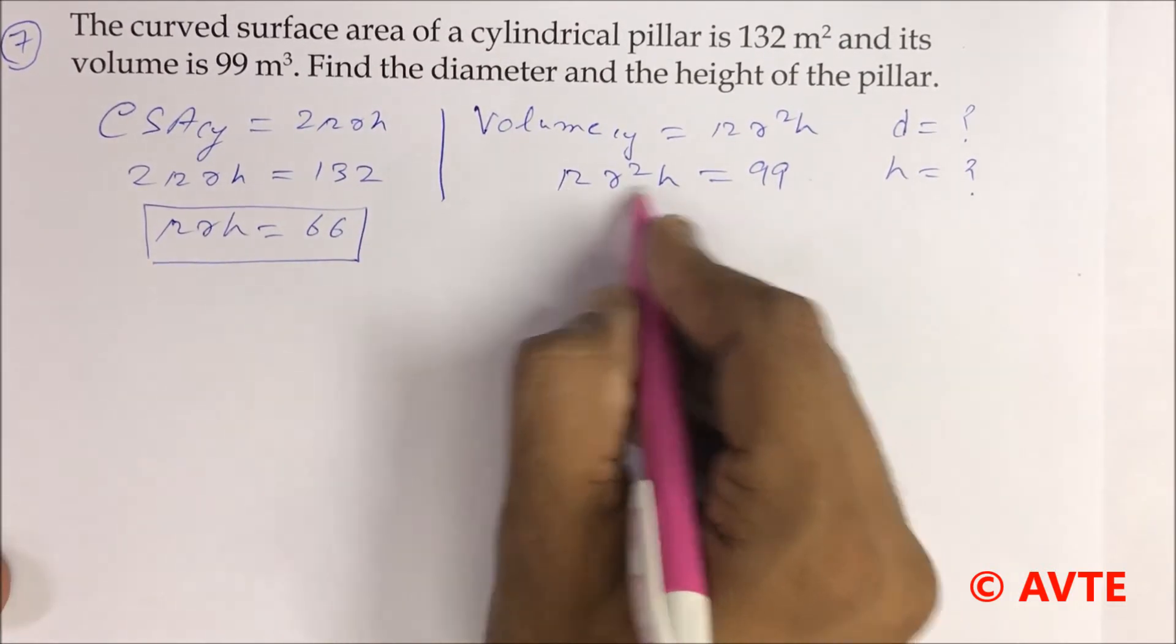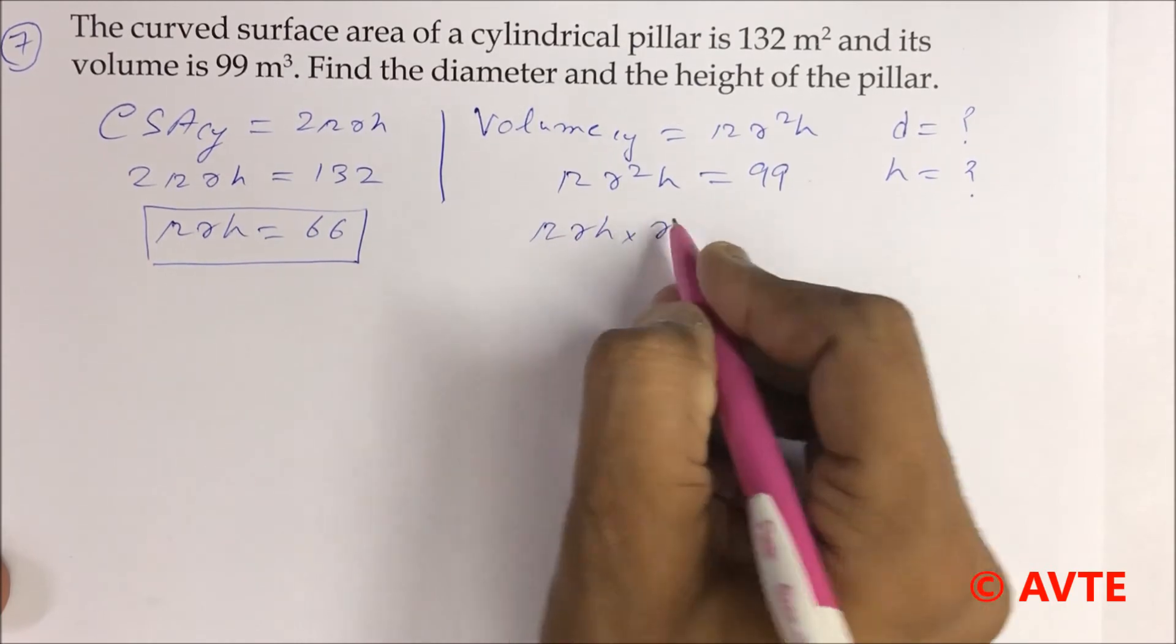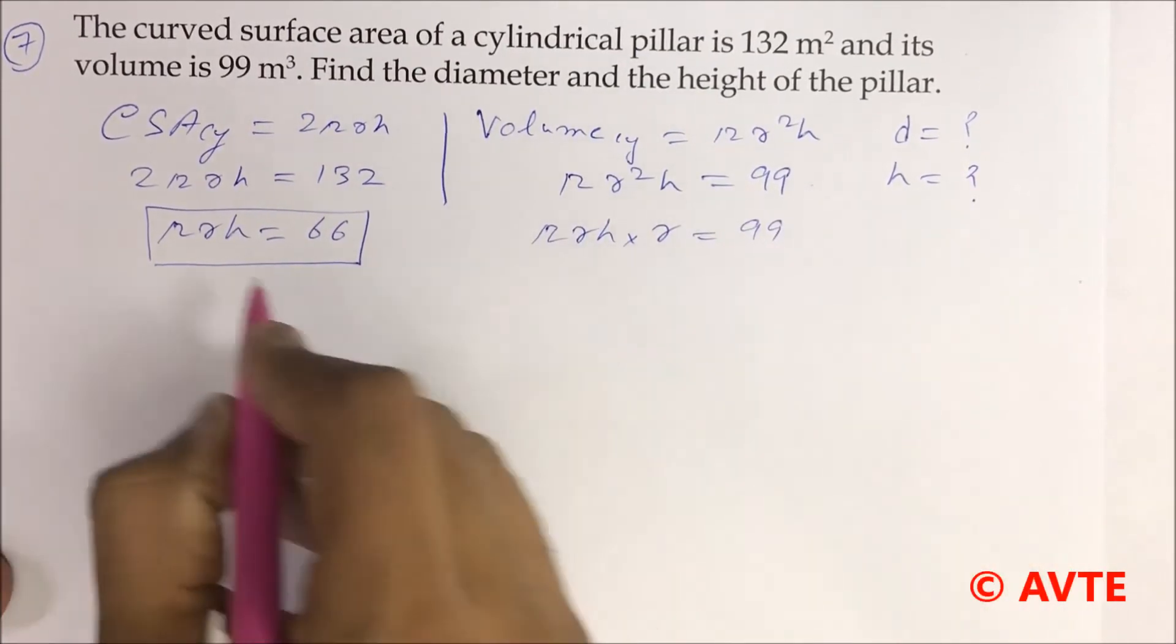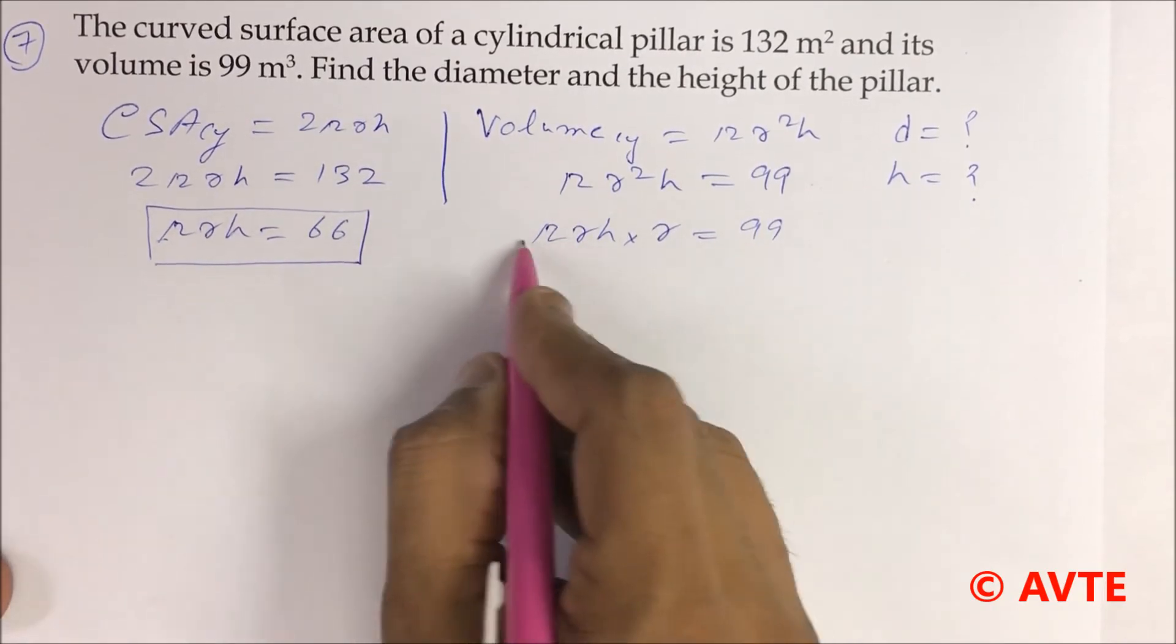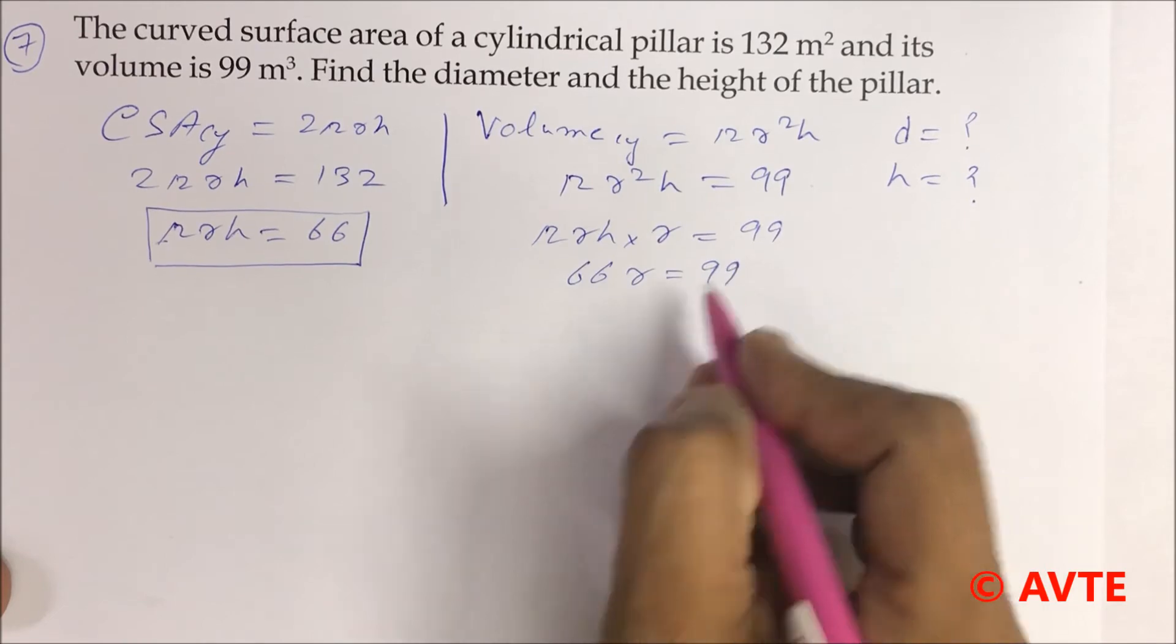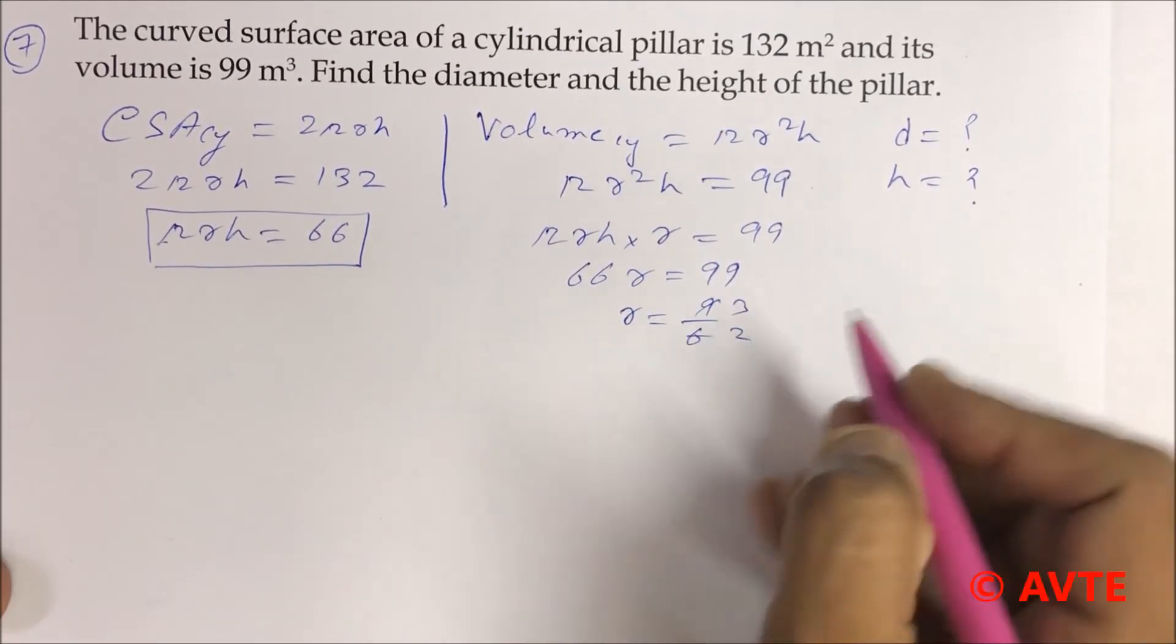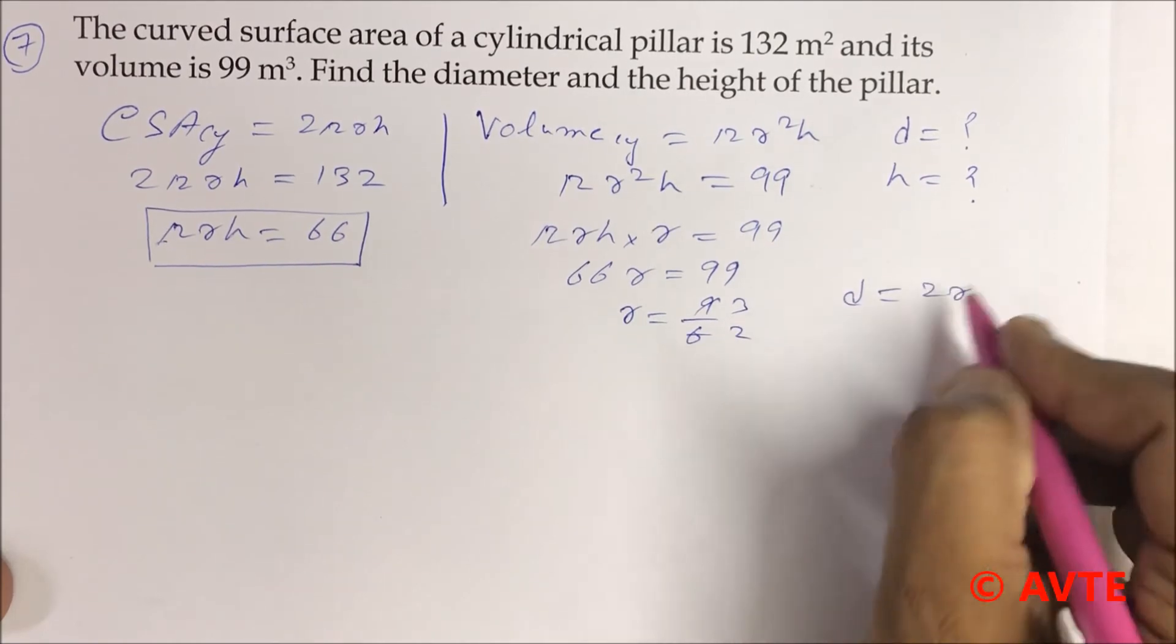I'll expand the formula πr²h as πrh times r equals 99. Put the value of πrh as 66, so 66r equals 99. Therefore r equals 99 divided by 66, which is 3/2. The diameter is 2r, that is 2 times 3/2, which equals 3 meters.